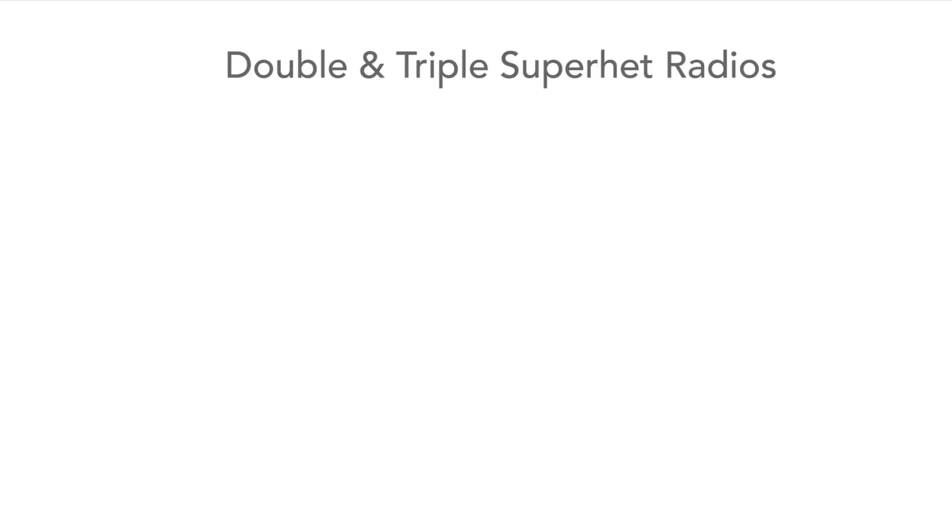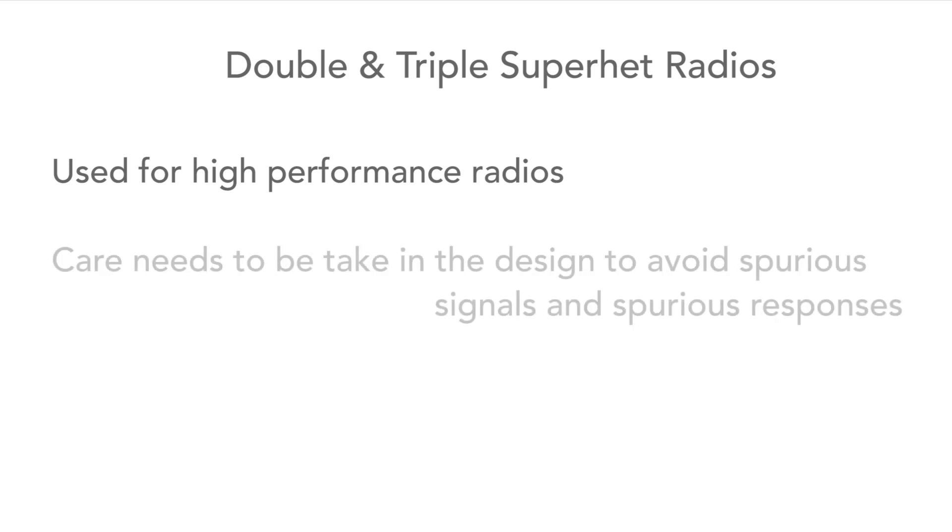Despite this, double and triple conversion superhet radios are still used for high-performance radios, as they can provide many advantages. However, when designing these radios, great care needs to be taken in their design to ensure that the number of spurious responses and signals is minimised.